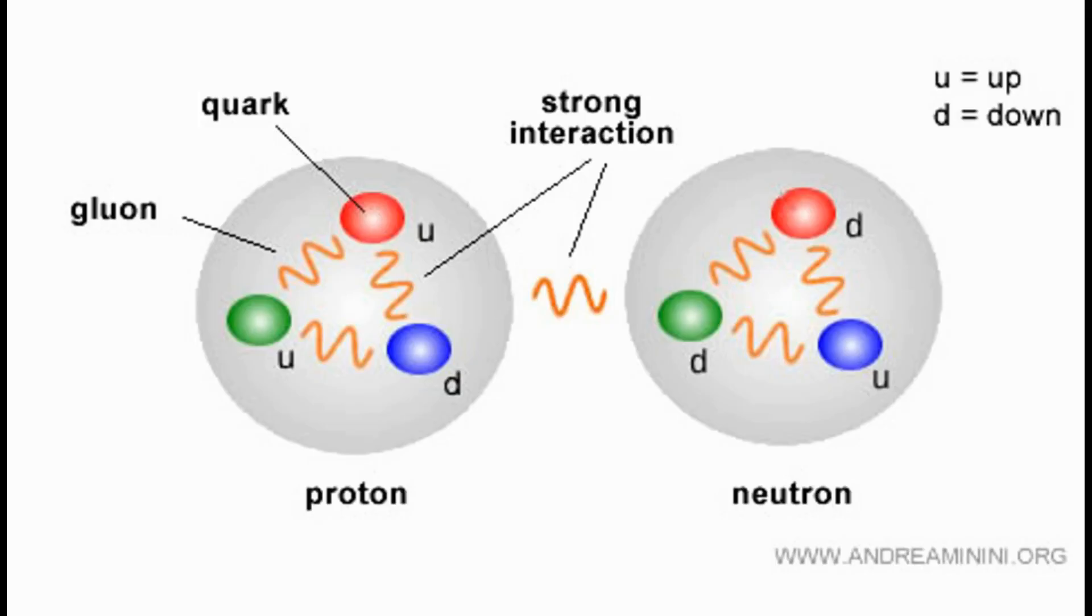Absolutely. Like with the neutron. A neutron is neutral. It has no charge. But it has a magnetic moment. How is that possible? Well, that was a huge clue that it wasn't an elementary particle. It told us there must be charged things moving around inside it. And there were quarks.